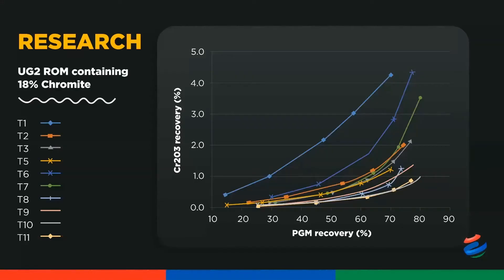For UG2 PGM ore, we have also seen a definite trend of reduced chrome recovery with the MACH when compared to the base case. It is hypothesized that this may be due to the removal of talc coatings on the chromite particles, or due to froth layer modification leading to reduced entrainment. Studies are ongoing to deepen our understanding of the various mechanisms that could be at play.